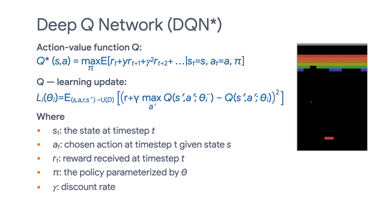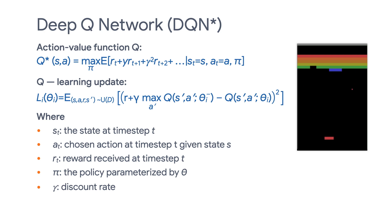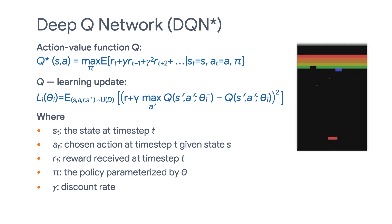We're not going into the math here, but basically it tells you how to update the neural network parameters based on the experience trajectories we collect during the training gameplays. For more detailed discussion on DQN, I highly recommend the reinforcement learning course by DeepMind and University College London.